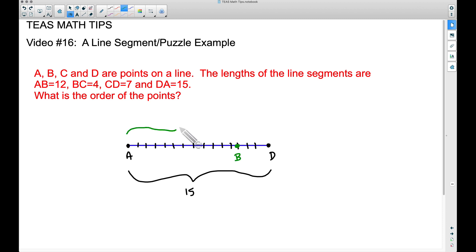Now the next longest one: CD equals 7. Again, let's make the assumption that perhaps C will be somewhere inside of here. And if the distance from C to D is 7, I got D way over here...